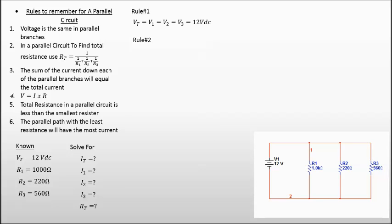Rule number two, let's find the total resistance for the circuit. So R total is going to equal one over the inverse of R1 plus the inverse of R2 plus the inverse of R3. So we put the three resistors in there, and our total for R total is 136.4 ohms.